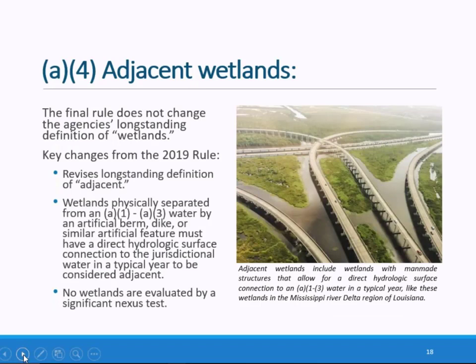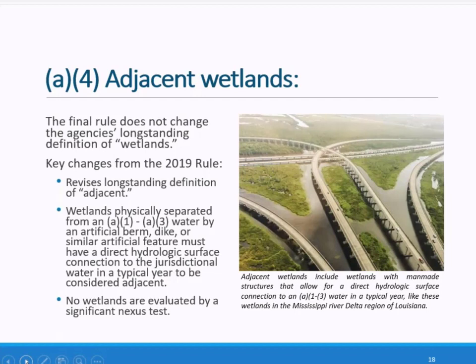It's important to note that the agencies have not modified their long-standing definition of wetlands. Before determining if a wetland meets one of the conditions of adjacency under the final rule, it must first meet the regulatory definition of a wetland — meaning it has the appropriate hydrology, vegetation, and soil. The agencies have changed their tests for determining whether a wetland is adjacent compared to the 2019 rule. The final rule does not require a significant nexus analysis to determine adjacency of a wetland.